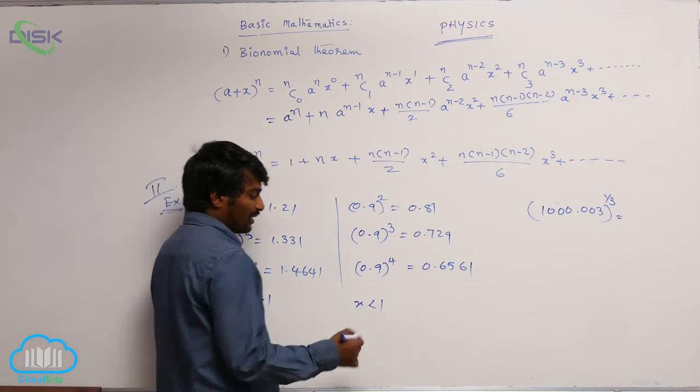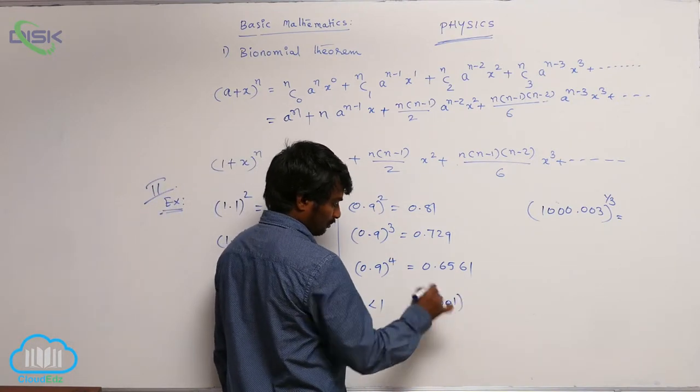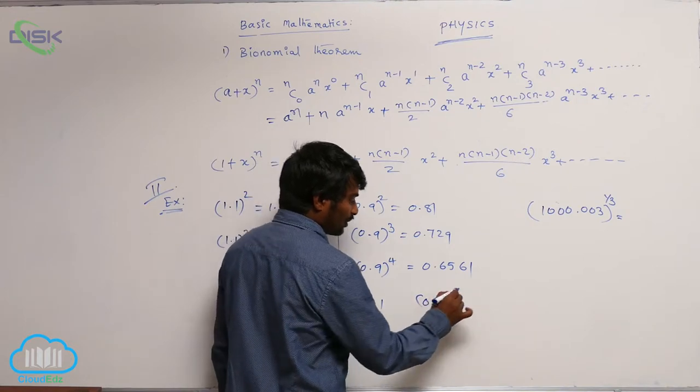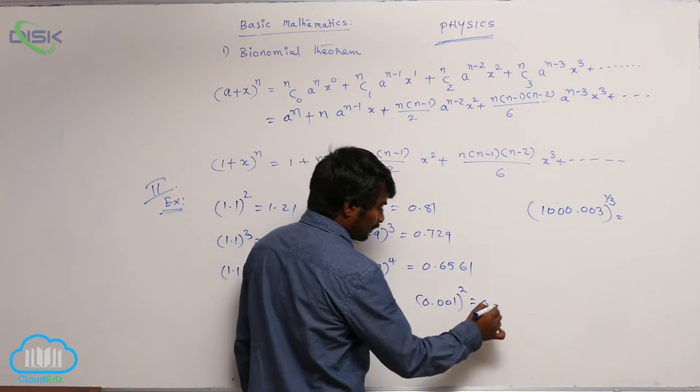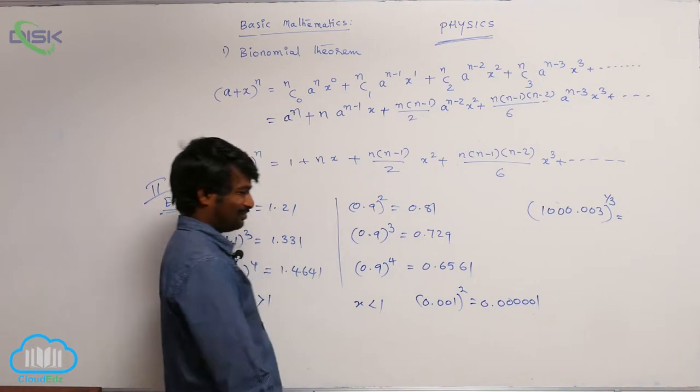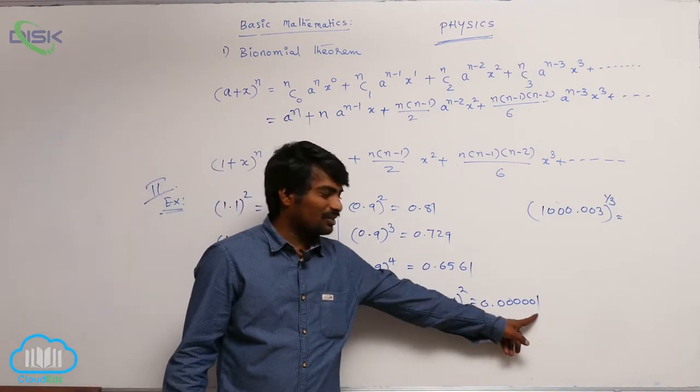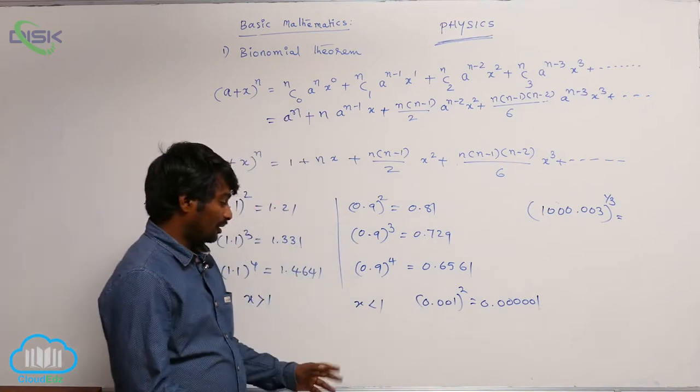Suppose, if I take 0.001 is the number and if you square it, what you are going to get? If I take 0.00001, it is very less value and we can neglect it.